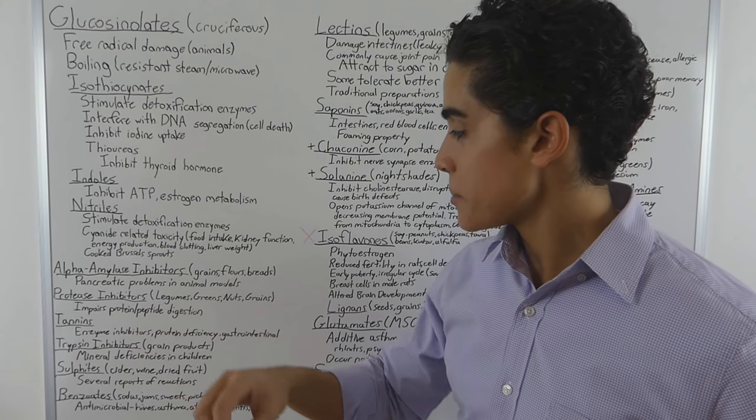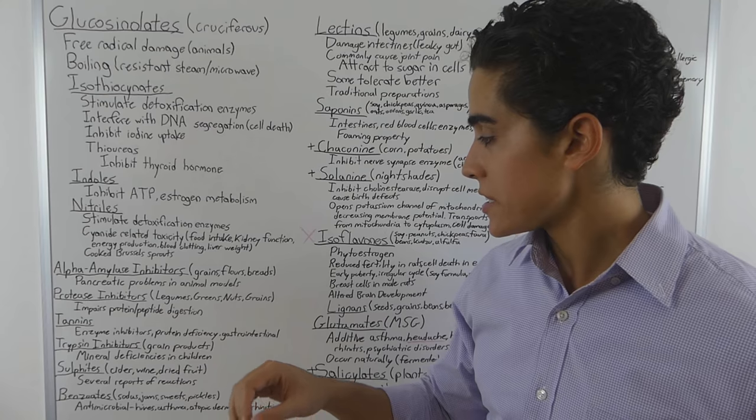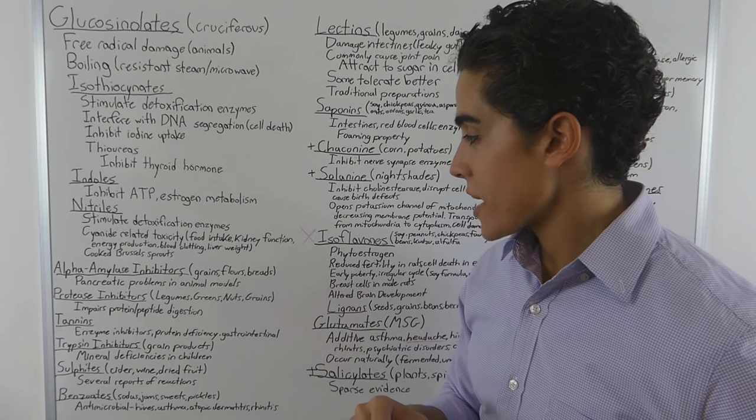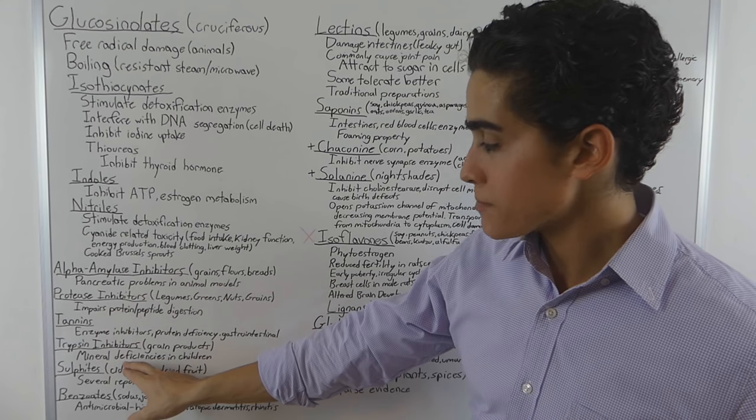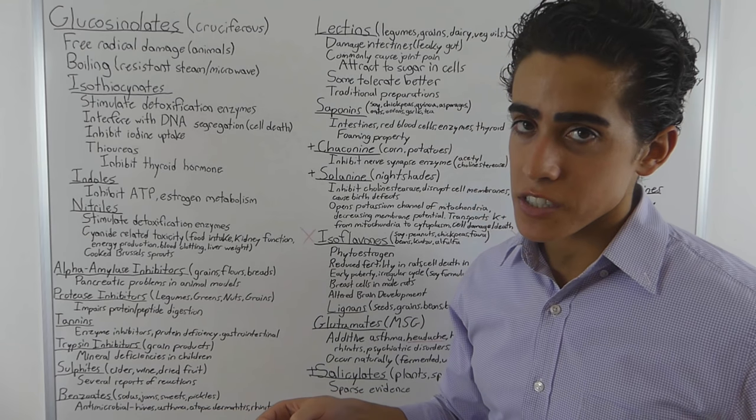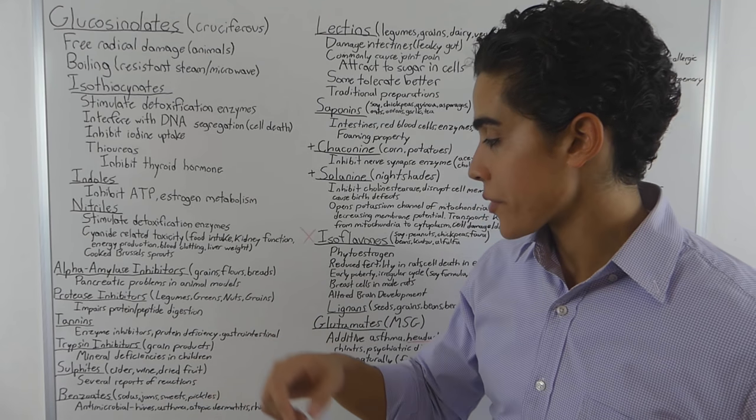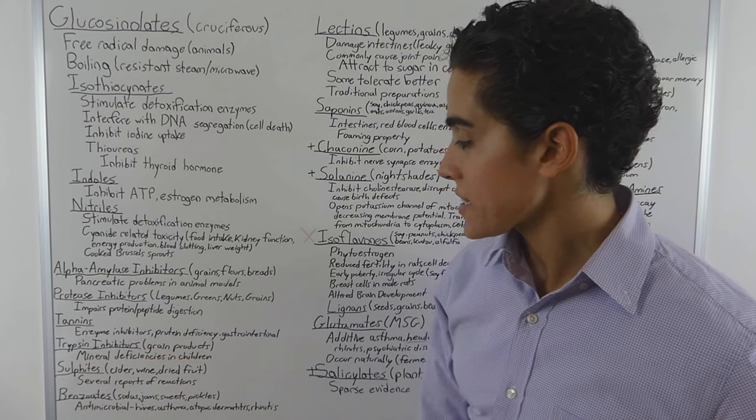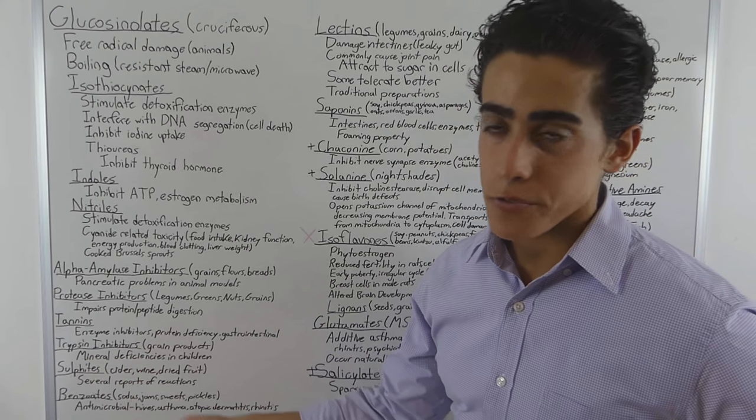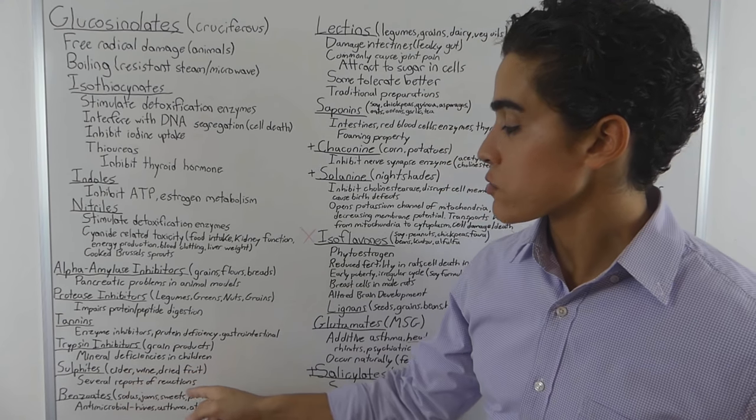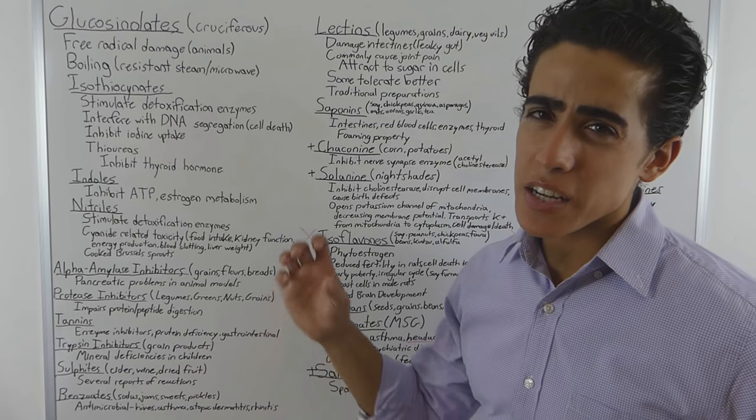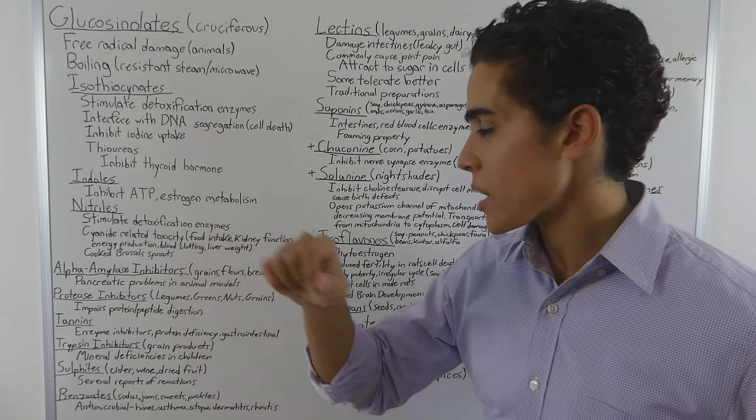Tannins can be enzyme inhibitors, cause protein deficiency, gastrointestinal distress, trypsin inhibitors. Mainly associated with mineral deficiencies in children and are contained in grain products. Sulfites, you know cider, wine, dried fruit tend to be added. Several reports of reactions to sulfites, definitely problematic for some people. I know that was big years ago.